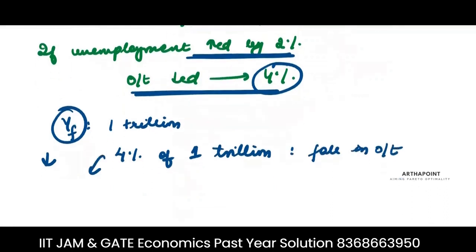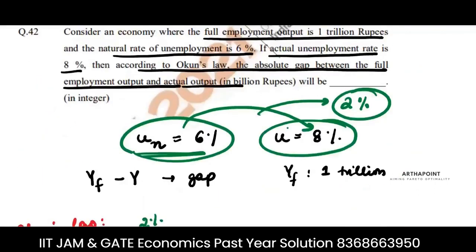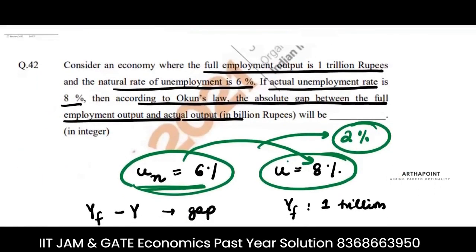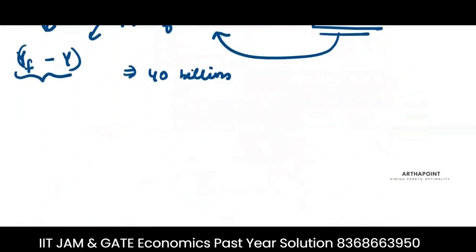This fall in output represents the difference between full employment output and actual output — the gap we need to find. This fall is 4% of 1 trillion, which equals 40 billion rupees. So the answer to this question is 40 billion.